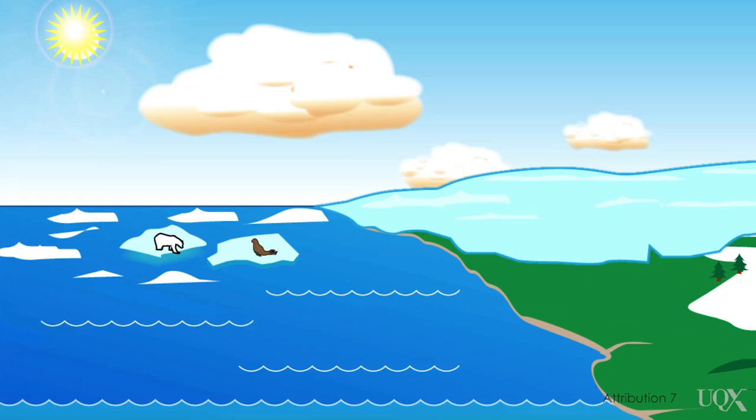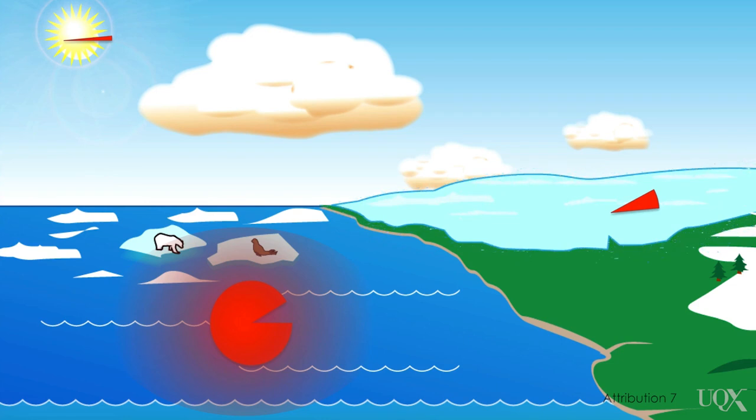Most of the earth is covered by water. Water can hold a lot more heat than air. In fact, more than 90% of the extra heat trapped by the earth goes into warming the oceans. Some of what's left warms the land or melts ice. But only about 2% of the extra heat ends up in the atmosphere.